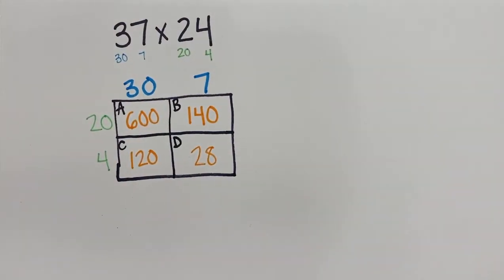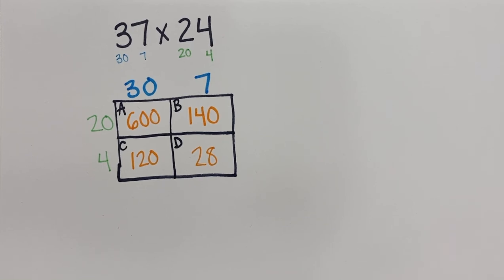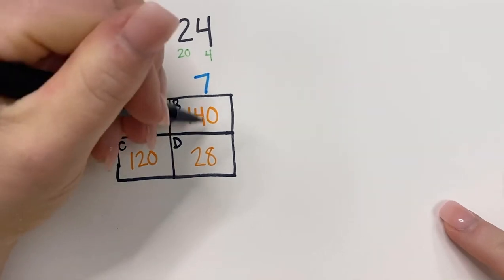I'm just breaking apart those numbers so I can multiply them. Now, obviously, I still need to figure out my solution, right? My answer. So, what I need to do is add each of the numbers up.